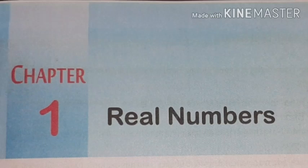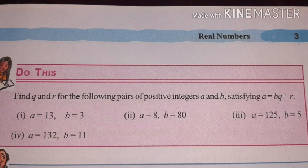Real numbers, 10th class, Chapter 1, page number 3. Find Q and R for the following pairs of positive integers A and B, satisfying A is equal to BQ plus R.